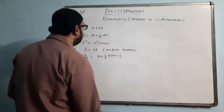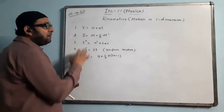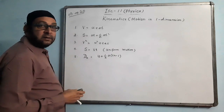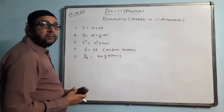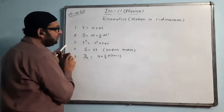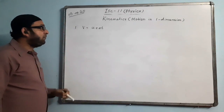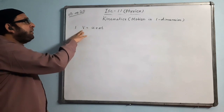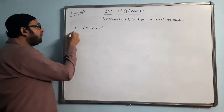Now we will prove these formulas one by one. If a question comes to prove these formulas, there are various methods: analytical method, graphical method, and calculus method. We will use the easiest method, that is the analytical method. Let us first prove v = u + at.